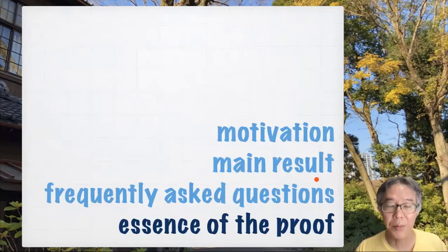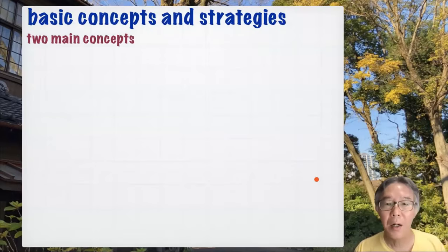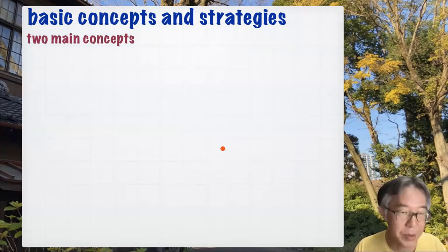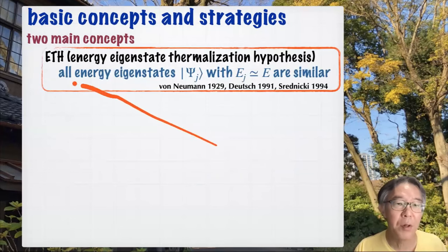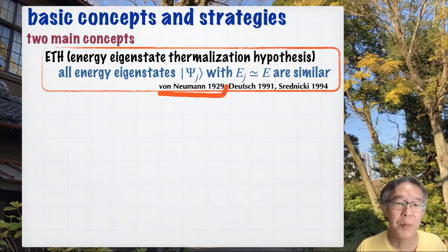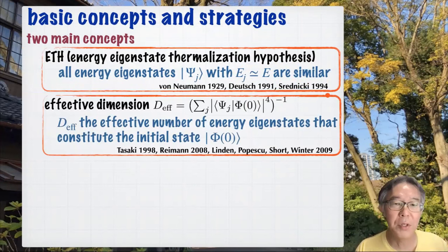Let me discuss the essence of the proof rather briefly. In this business of thermalization, there are two important concepts. One is very famous and called ETH — energy eigenstate thermalization hypothesis. It basically says that all energy eigenstates with close energy eigenvalues are similar to each other. It was actually first proposed by von Neumann — he didn't call it ETH, but he first introduced this notion, and it was rediscovered later. The other very important concept, which is less famous, is called the effective dimension.